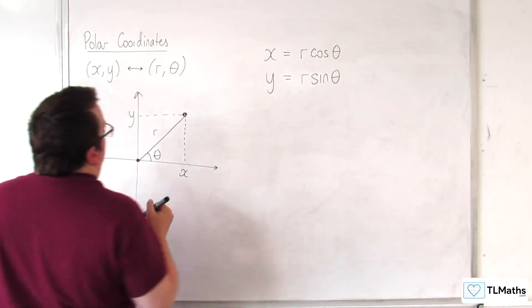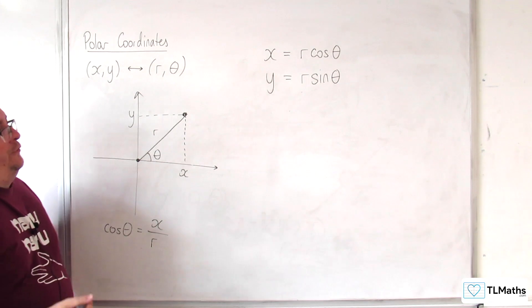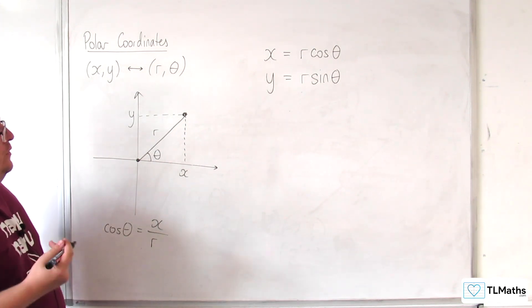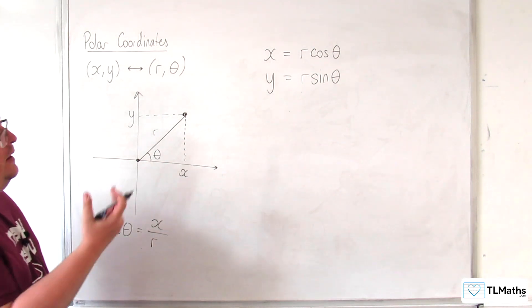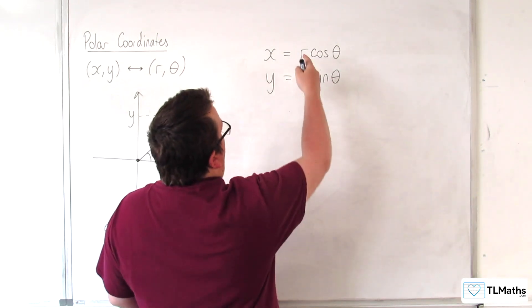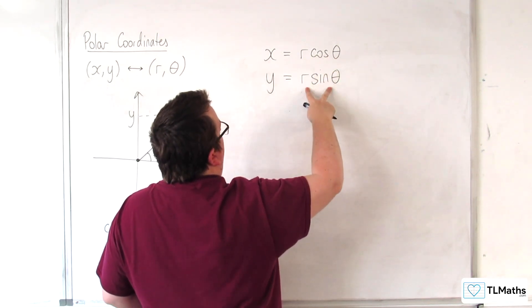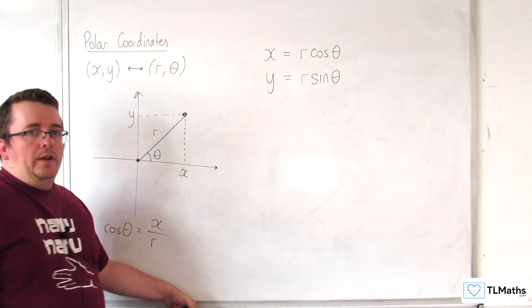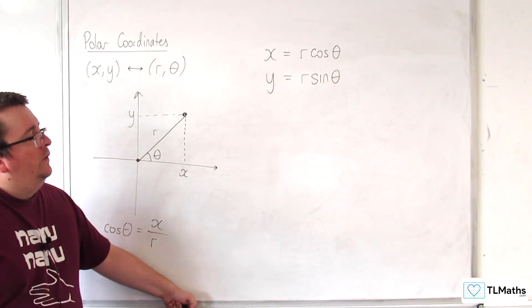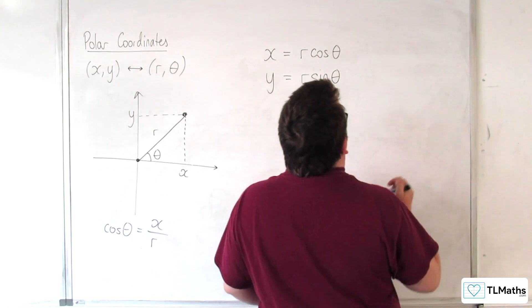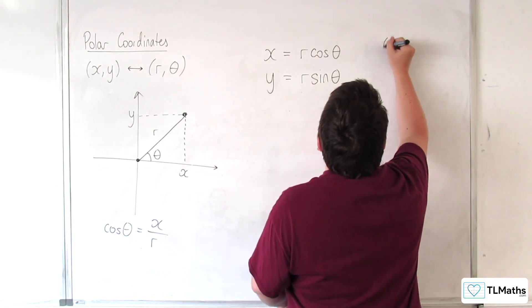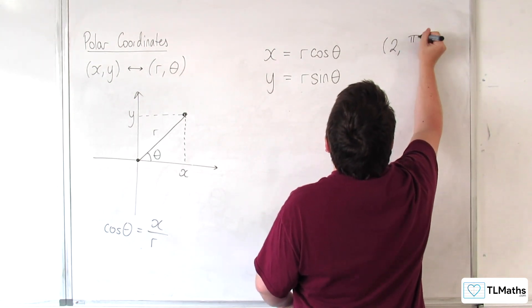What that allows us to do is then say, if we have our R and we have our theta, we can substitute those in to get our X and Y coordinates. So, let's say, for example, we have the point (2, π/4).